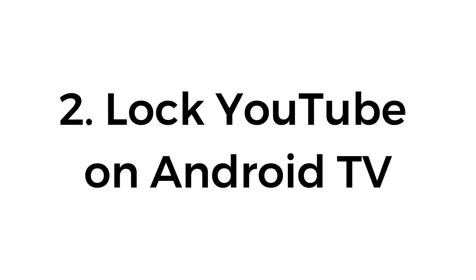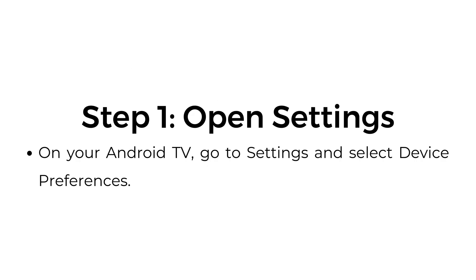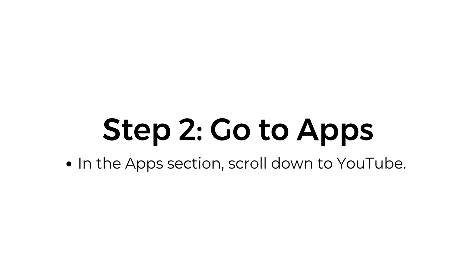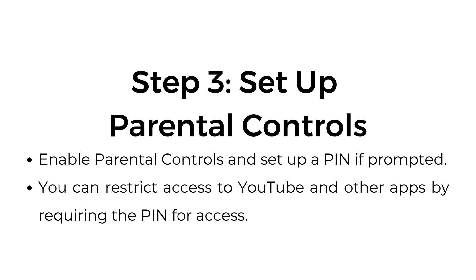Number two: lock YouTube on Android TV. Step one: open settings — on your Android TV, go to settings and select device preferences. Step two: go to apps — in the apps section, scroll down to YouTube. Step three: set up parental controls. Enable parental controls and set up a PIN if prompted. You can restrict access to YouTube and other apps by requiring the PIN for access.